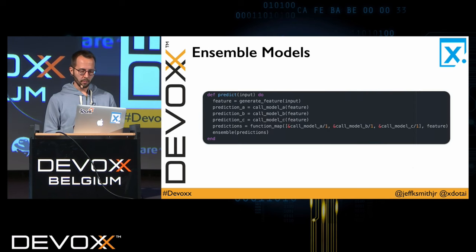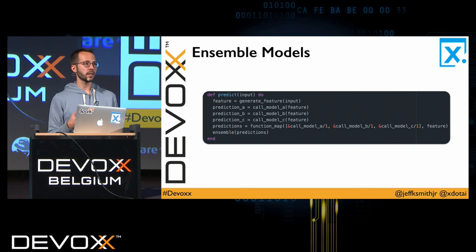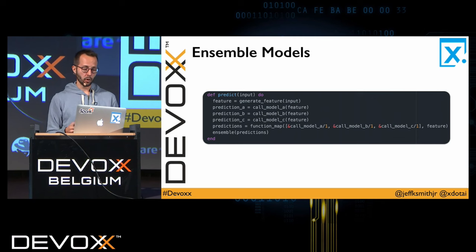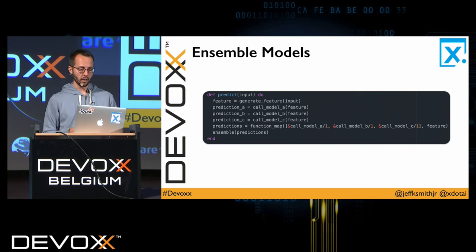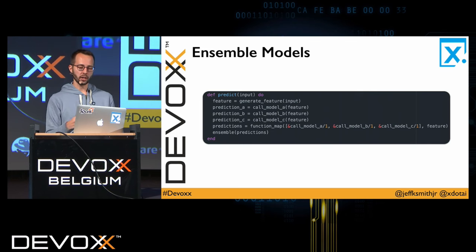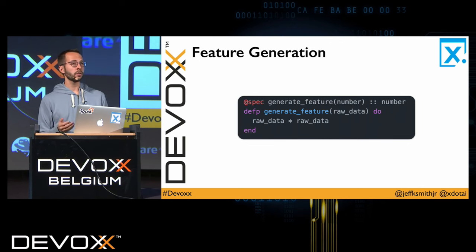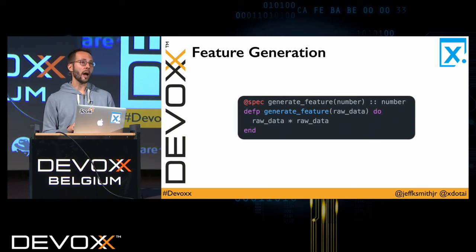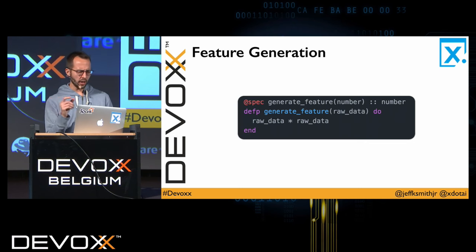I'll show how this works within the context of building an ensemble model. Ensembling models simply means using multiple models in combination to make a single decision. We take in some raw input, generate features — a semantically meaningful derived representation of our raw data — then make predictions across all our different models and combine them to produce a combined decision. We use the spec annotation from Dialyzer, optionally annotating our type expectations in an Elixir program because we want some help, saying our generate-features function should take a number and return a number.